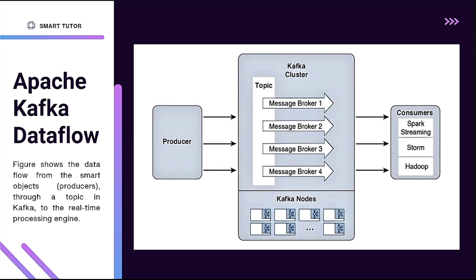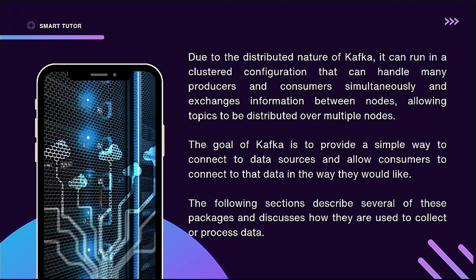The consumers are Spark Streaming, Storm, and Hadoop. Due to the distributed nature of Kafka, it operates as a Kafka cluster. It handles many producers and consumers simultaneously, allowing topics to be distributed over multiple nodes.